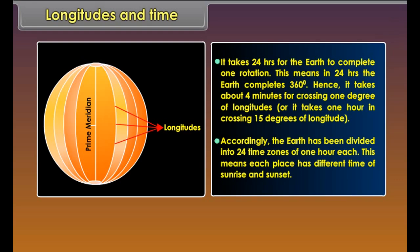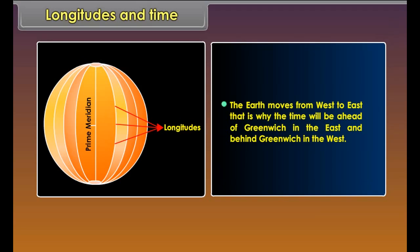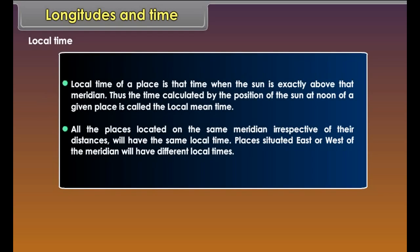Longitudes and Time: Longitudes help us to calculate time. Time is measured by the movement of the earth. The earth moves on its axis from west to east — this is called rotation. It takes 24 hours for the earth to complete one rotation, meaning in 24 hours the earth completes 360 degrees. Hence, it takes about 4 minutes for crossing 1 degree of longitude, or 1 hour in crossing 15 degrees of longitude. Accordingly, the earth has been divided into 24 time zones of 1 hour each.